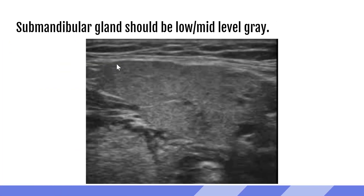The submandibular gland has that same low- to mid-level gray appearance and similar shape, but is considerably smaller, sitting underneath the chin in the submental space. It sits superior to the thyroid gland, so as you sweep through the thyroid, you'll pass through some neck stroma and then hit the submandibular gland. Neither the submandibular nor the parotid gland are particularly vascularized — they receive blood flow from branches of the superior thyroid artery, so we might pick up a little vasculature in them, but nothing extensive.